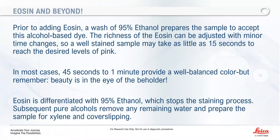Eosin is differentiated typically with 95% ethanol to stop the staining process. Some use 50% or 70% — the more water in the alcohol following eosin, the more pink color it pulls out. So if you're over-staining with eosin, a 50% or 70% alcohol will help. From there, go to pure alcohol and then to your clearing agent so you can get the slide cover-slipped and ready to view.